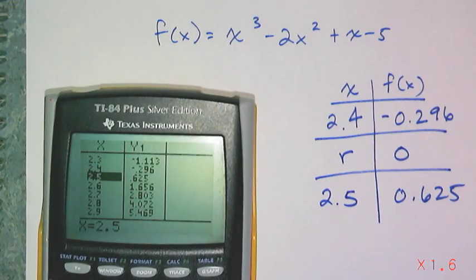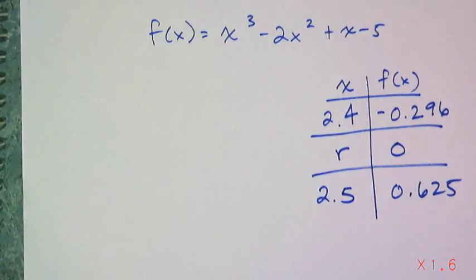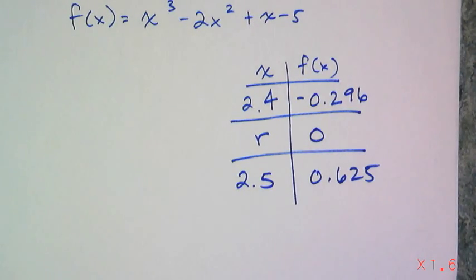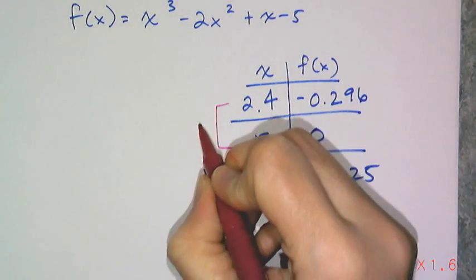That's my table that I'm going to now use interpolation on to figure out what my root is approximately to the nearest hundredth. And so I'm going to go ahead and set up my ratios.